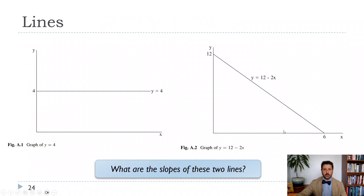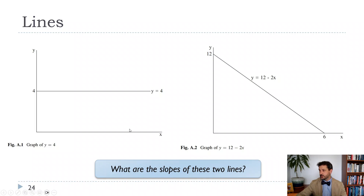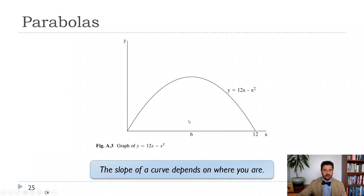Just a quick reminder: when we have a horizontal line like y = 4, the slope is zero — there's no x term. For a downward sloping line like a demand function, the slope is just the coefficient on the x term, so minus two in this case. If it's downward sloping we have a negative slope; if upward sloping, a positive slope. The law of demand says we will have a downward sloping demand curve.